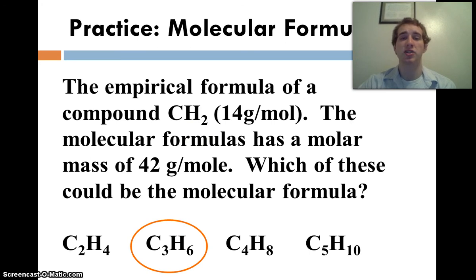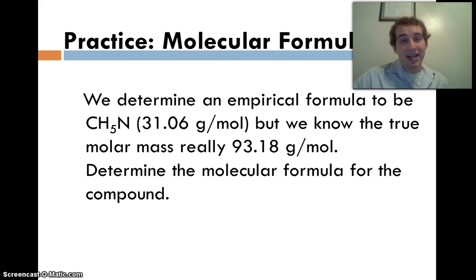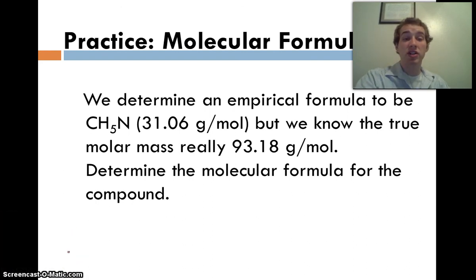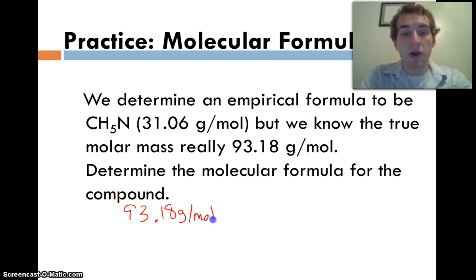All right, let's try another one. Here we determine the empirical formula to be CH5N. It's a molar mass of 31.06 grams per mole. But we know the true molar mass is actually 93.18 grams per mole. Determine the molecular formula of the compound. Well, to figure out how many times bigger the larger compound is, we're going to take the larger molar mass, 93.18 grams per mole, divide by the smaller one, in this case, 31.06 grams per mole.